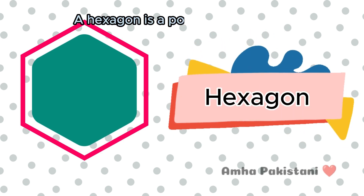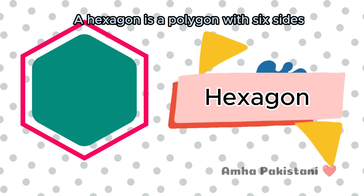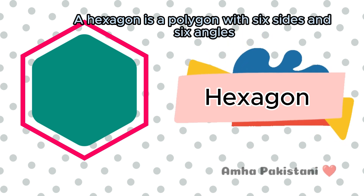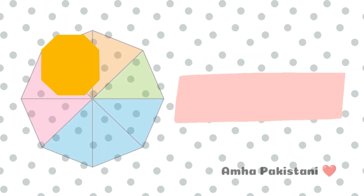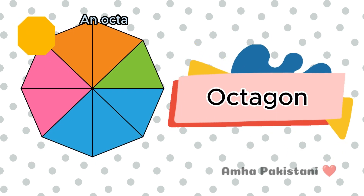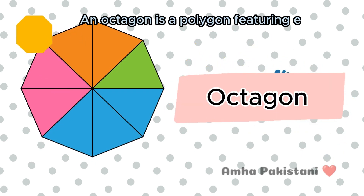Hexagon. A hexagon is a polygon with six sides and six angles. Hexagon.